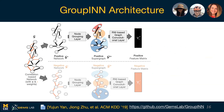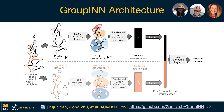Then the second layer is a random walk-based graph convolutional layer, which captures the structure within this aggregated network that we've learned. At the end, we flatten these embeddings and feed them into a fully connected layer to predict the label as is usually done.